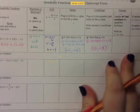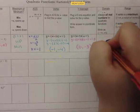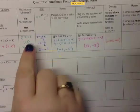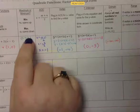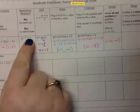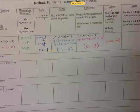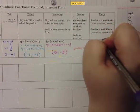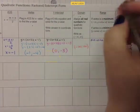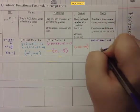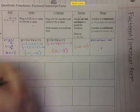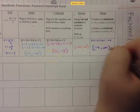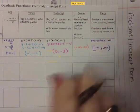Our domain, as always, is negative infinity to positive infinity. For the range, it depends on minimum or maximum. If a is positive, you'll have a positive infinity on the right. Since it's a minimum, we need the minimum value — that's the y-value of the vertex, which is negative 4. So the range is written as: negative 4, close bracket, comma, positive infinity, open bracket — meaning from negative 4 up to positive infinity.